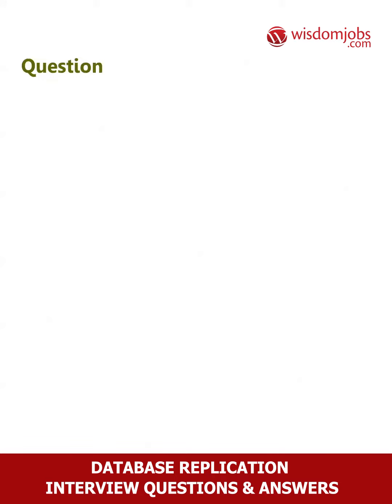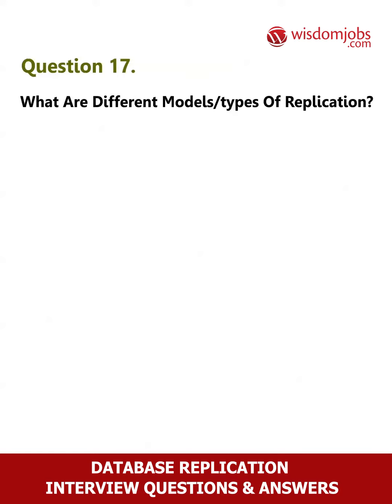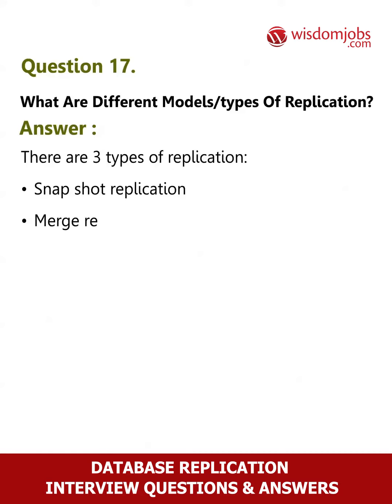Question 17. What are the different models and types of replication? Answer. There are three types of replication: Snapshot replication, Merge replication, and Transactional replication.